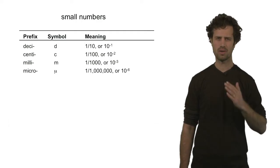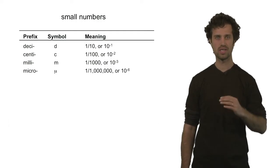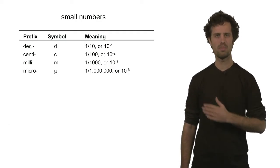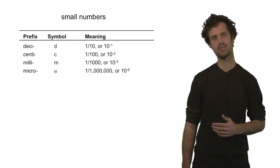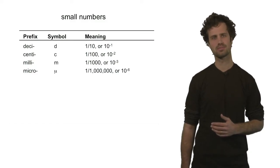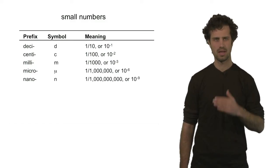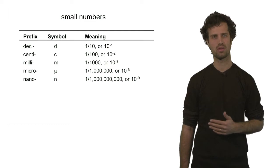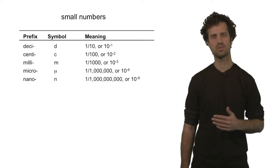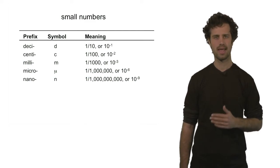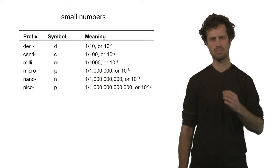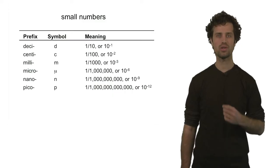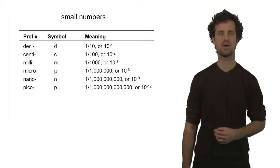Micro, or mu — the Greek letter mu — means one millionth, or ten to the minus six. Nano, or n, means one billionth, or ten to the minus nine. And pico, or p, means one trillionth, or ten to the minus twelve.